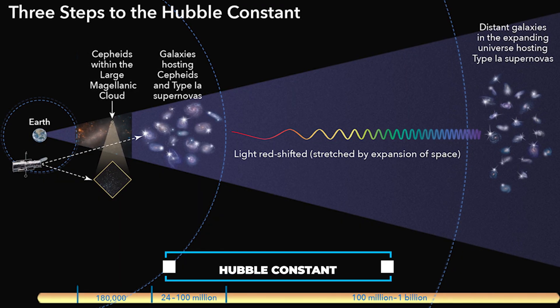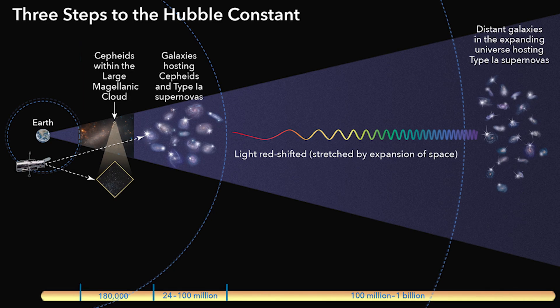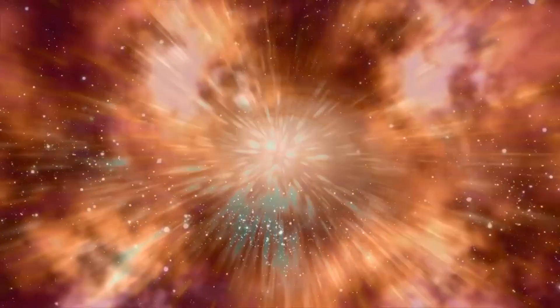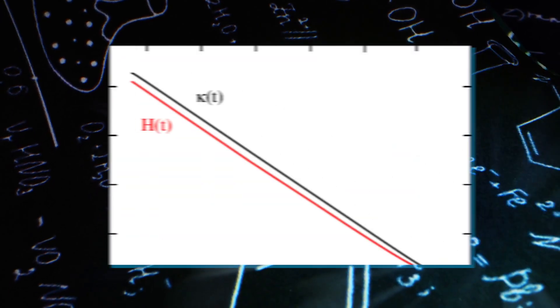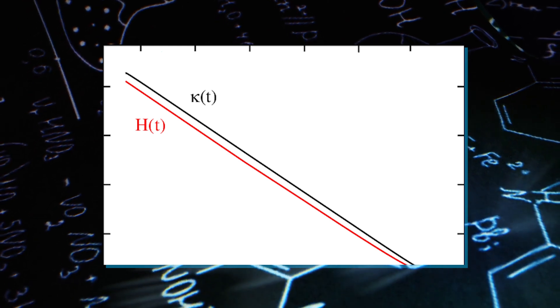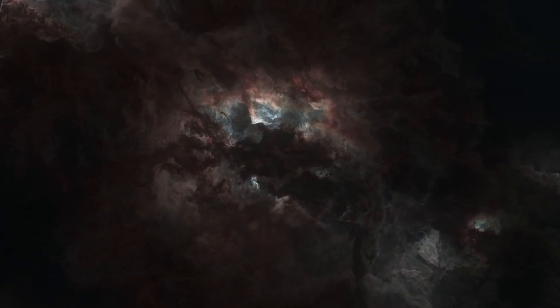The Hubble constant, which quantifies the rate at which the universe is expanding, stands as a fundamental parameter in unraveling the universe's evolution and its eventual destiny. To illustrate this, picture the universe as an expansive balloon, gradually enlarging over time. The Hubble constant functions as a unique numerical value that informs us of the pace at which this cosmic balloon inflates.